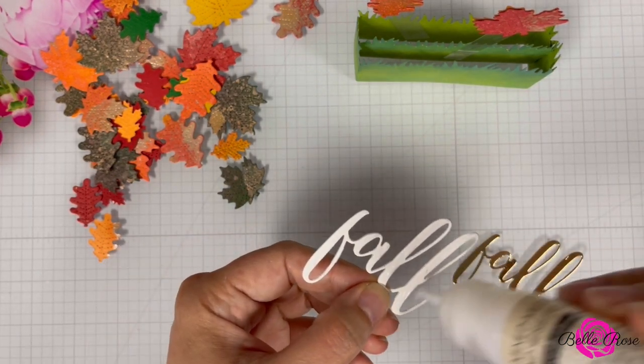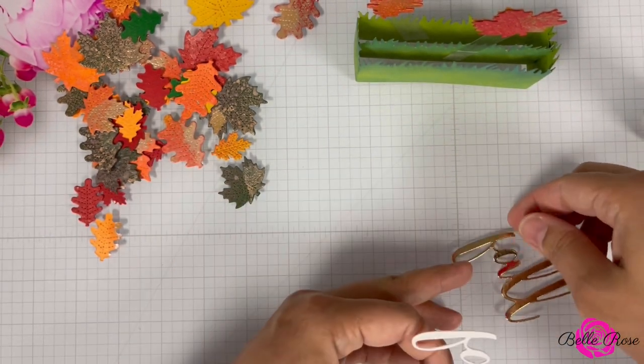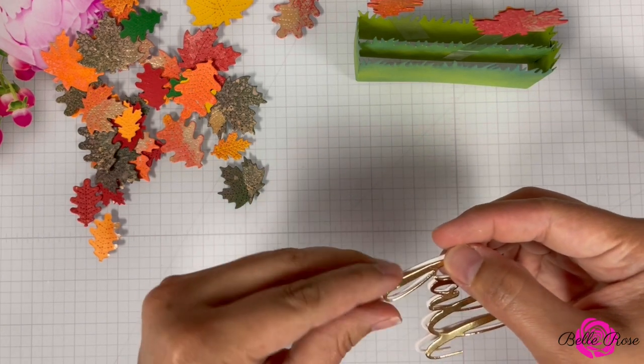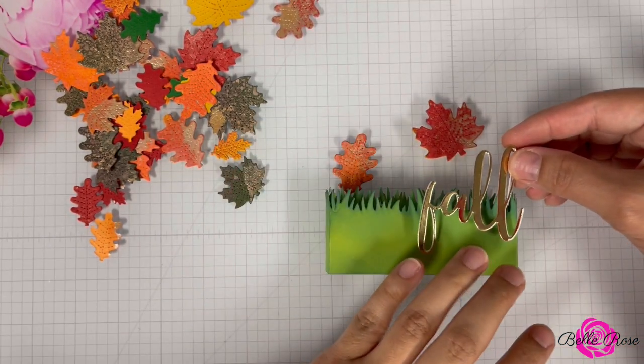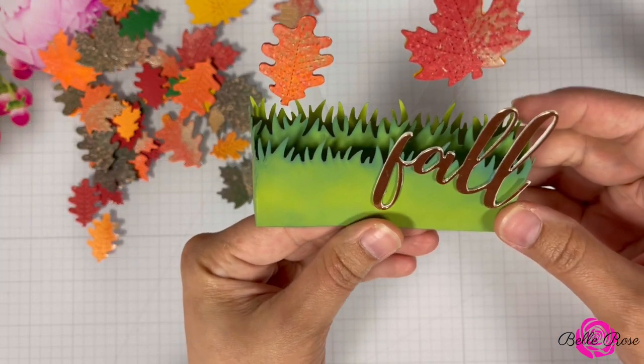Right here, I decided to go ahead and bring in my sentiment. I did die cut this off-camera twice out of white cardstock and once out of metallic gold. Once I'm done assembling it together, I'm then going to adhere it to the card base.